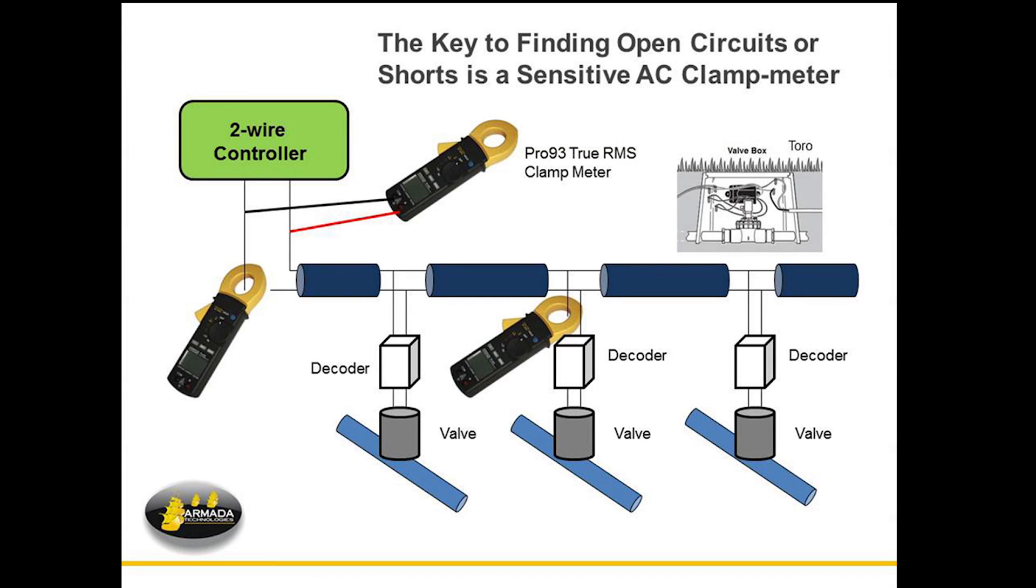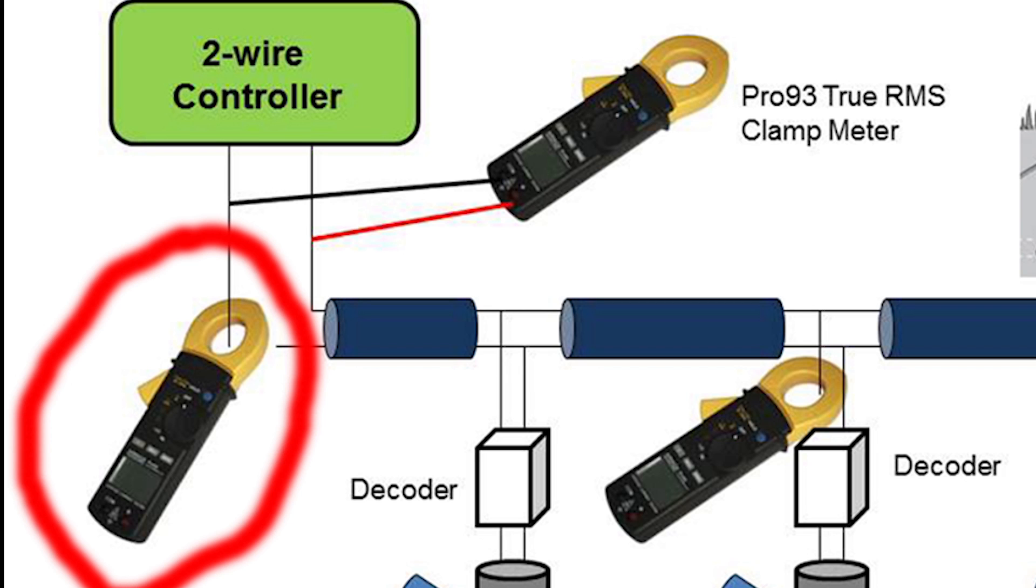This is what a typical two-wire system looks like, and this is a diagram of how you would use a Pro93 in that system to diagnose. Out of your two-wire controller comes a certain amount of milliamp current that is measurable by the Pro93. In the first instance here on the elbow, the Pro93 is going to measure—let's say there's 200 milliamps coming out of that controller.